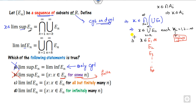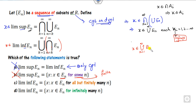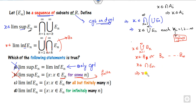Similarly, for the liminf: if x belongs to the liminf, that means x belongs to the union of the intersections. Let Bₖ denote that intersection. So x belongs to Bₖ for some k, meaning x belongs to each Eₙ for n varying from k to infinity. There are finitely many values in each such intersection. The right answer is C — the 'infinitely many' option is cancelled because the word 'all' here refers to finitely many values of n.